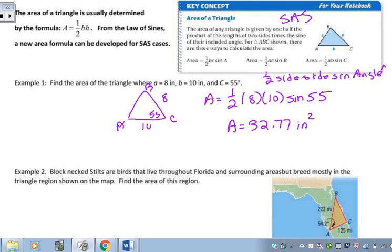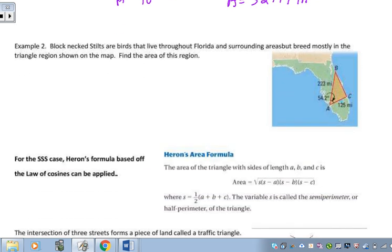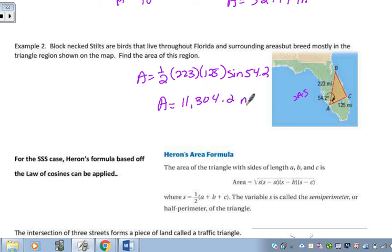Okay, let's take an example that would be more of a word problem type situation. So we're looking to take the area of this three cities or this area in Florida. Again, I'm looking at a side angle side situation. So I know I'm going to use this formula. So area is going to be 1 half the side, which is 223 times the side of 125 times the sine of 54.2. And again, at that point it's just calculated work and we get 11,304.2 miles squared.